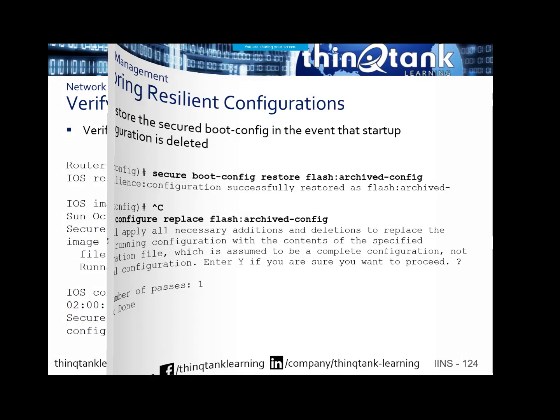What happens if I have to recover? It's very simple. You go into global configuration mode and you type secure boot-config restore flash colon. And this is not the name of the file you're restoring from — this is the name of the file you're restoring to. So you're saying go ahead and recover my config and put it in flash and call it archived config. Then you do a configure replace, which replaces the running config with this archived config. You don't even actually have to know what the file name is of that archived configuration, because you're just using the restore command and there's only one archived config in there.